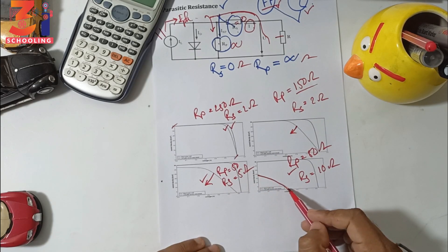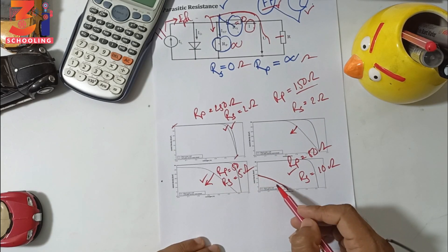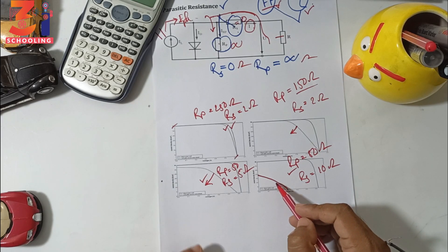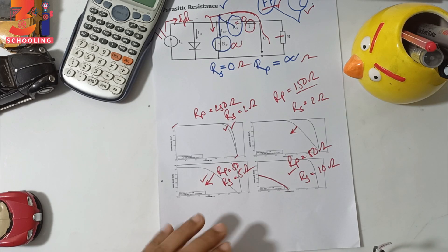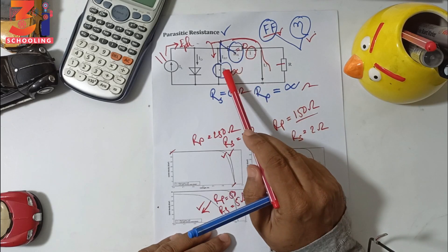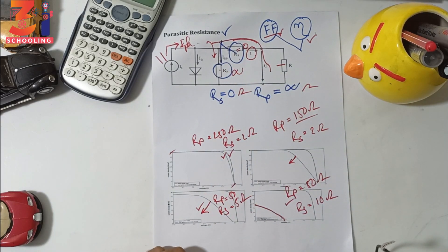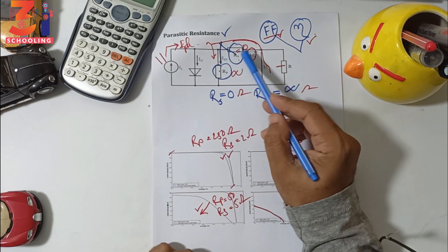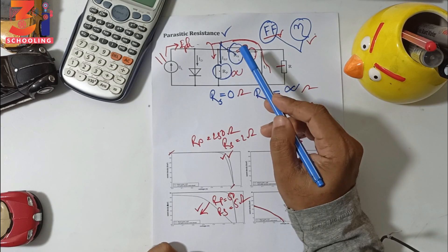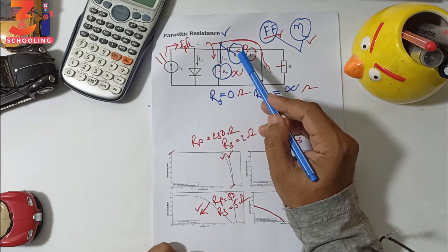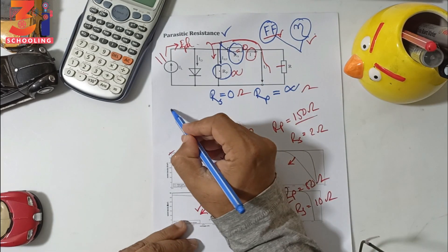To improve solar cell performance, we need to manage the parasitic resistances carefully. The series resistance Rs should be minimized as much as possible, because higher series resistance leads to lower power output and reduced cell performance.